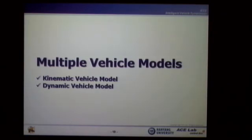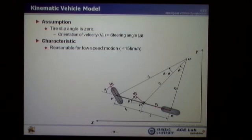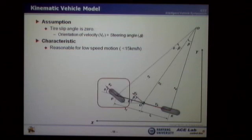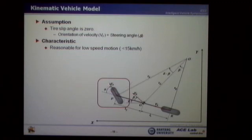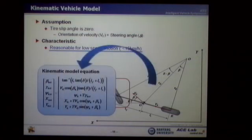I'm going to introduce the multiple vehicle models composed of kinematic and dynamic vehicle models. As you can see in this figure, the kinematic vehicle model is a 2-degrees-of-freedom bicycle model. This model has an assumption that the tire slip angle is zero. Therefore, the orientation of velocity and steering angle are always the same. This characteristic is reasonable for low-speed motion. From this kinematic relationship, we can derive the kinematic model equation.